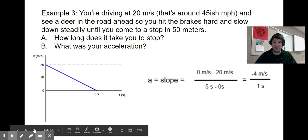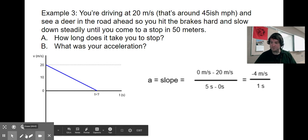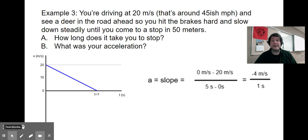For the acceleration, again, we're just taking a slope: rise over run. We decrease by 20 meters per second in five seconds, which reduces down to negative four meters per second. Negative four meters per second each second of slowing down. Have a great day.